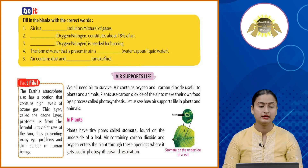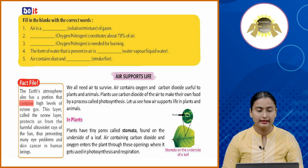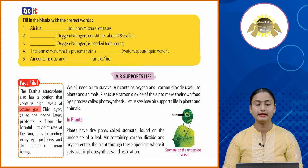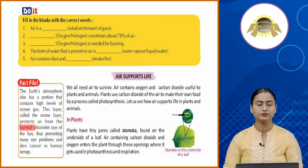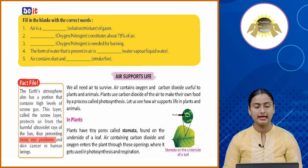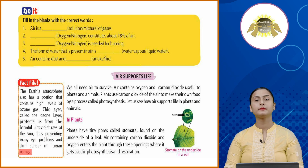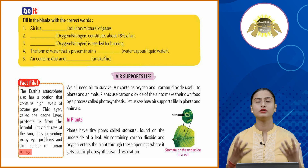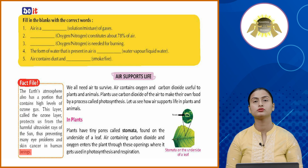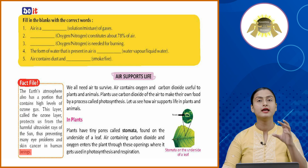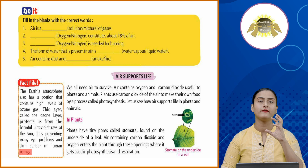Fact file: The Earth's atmosphere has a layer that contains high levels of ozone gas. This ozone layer protects us from the harmful ultraviolet rays of the sun, thus preventing many eye problems and skin cancer in human beings. The ozone layer saves us from the very harmful UV rays that can damage eyes and cause skin cancer.